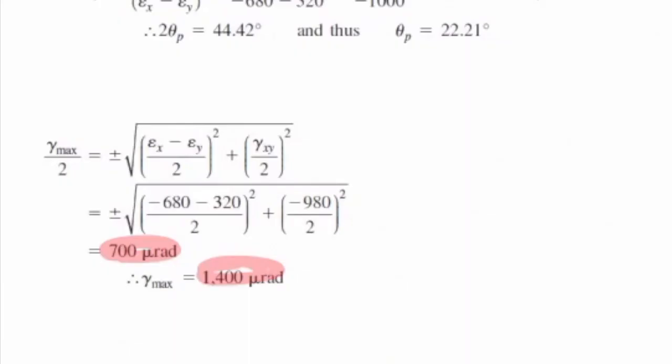Remember, 700 is half of gamma max. I multiply that by 2 to get gamma max equal to 1400.